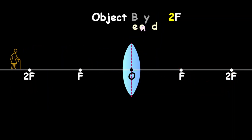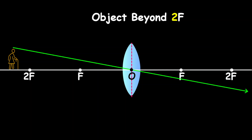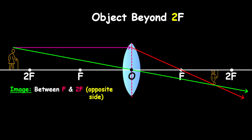Now let's look at the object beyond 2F. Again, our unrefracted ray, our parallel ray, and then our refracted ray — notice where they meet. They meet just in front of 2F. So the image is between F and 2F, on the opposite side, definitely inverted, and definitely real. Looking at which is closer, the image is closer to the lens, so therefore the image will be smaller or diminished.